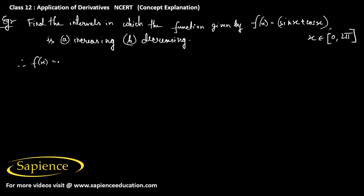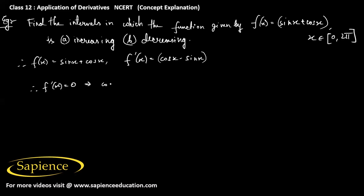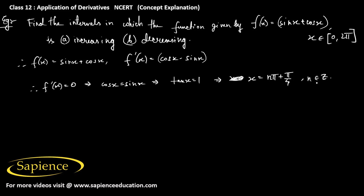The function f(x) = sin x + cos x. So f'(x) = cos x - sin x. Setting f'(x) = 0 implies cos x = sin x, which means tan x = 1. The general solution is x = nπ + π/4, where n belongs to ℤ.